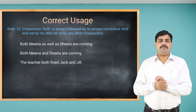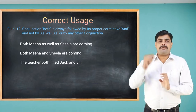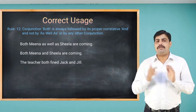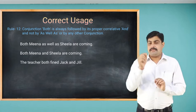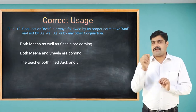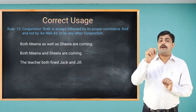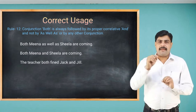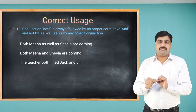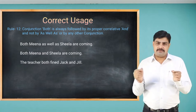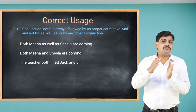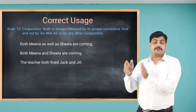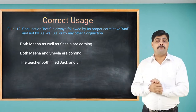Another example: 'The teacher both fined Jack and Jill' — the sentence is correct except the placement of 'both.' It should be placed near Jack and Jill because it represents them. The placement of the conjunction is not right in this example.